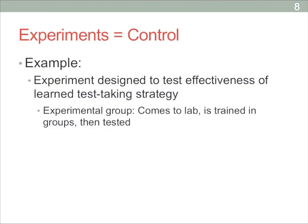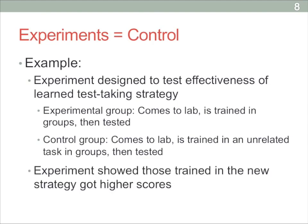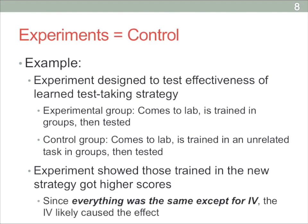To make it a better experiment, you could have the experimental group come into the lab, get trained in groups, and then get tested. With the control group, you have to make sure they have the exact same experience except for that test-taking strategy — so they still come to the lab, still get in groups, but train in an unrelated activity that's not the testing strategy, and then get tested. If the experimental group still shows higher scores, it must be because of the new test-taking strategy, because everything else is kept constant. That's really the key to an experiment: if you can keep everything constant except the independent variable and you see a difference at the end, it must be the independent variable causing that difference.